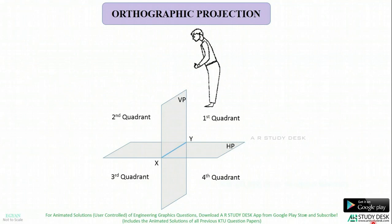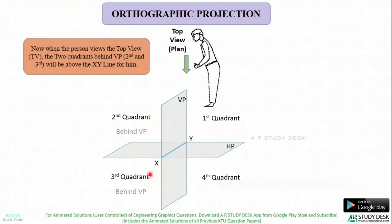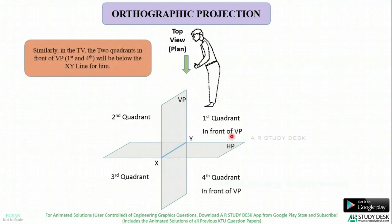Now let us see the top view, which has another name: plan — as used when drawing plans of buildings and houses. The 2 quadrants which are behind VP are 2 and 3. So when viewing from the top, these appear above the XY line. The 2 quadrants which are in front of VP — that is, the 1st and 4th quadrant — will be below the XY line when viewing from the top.